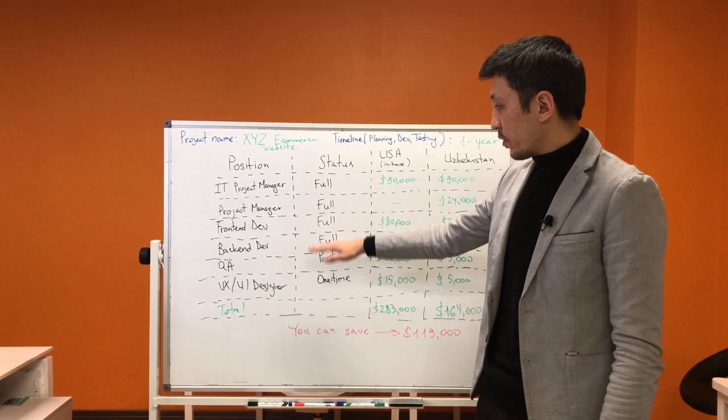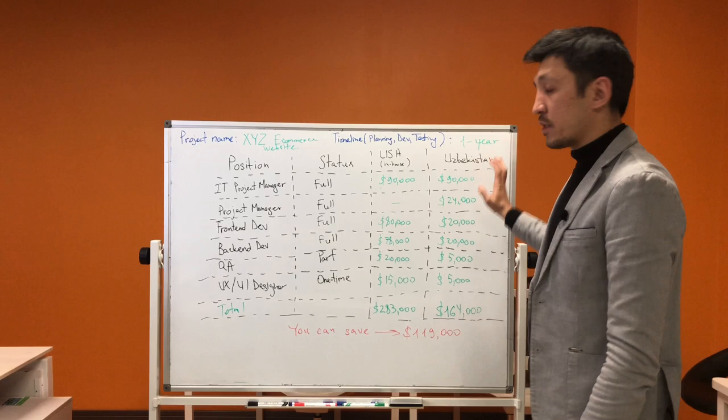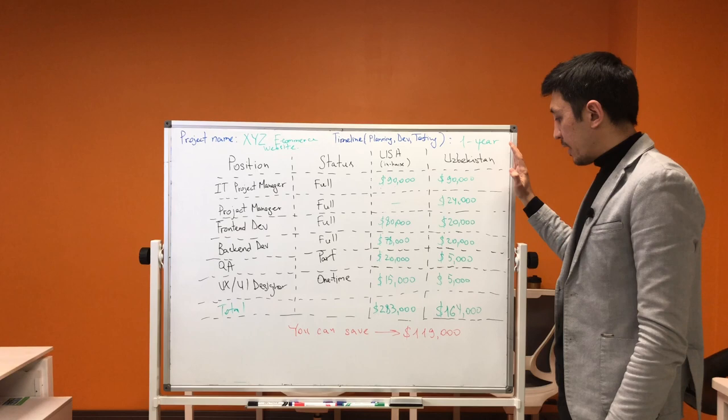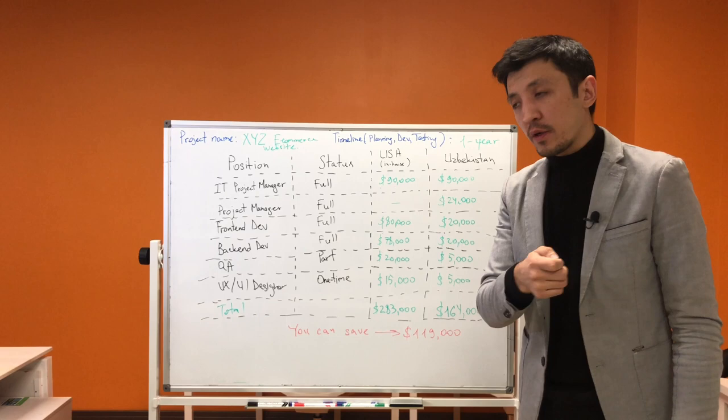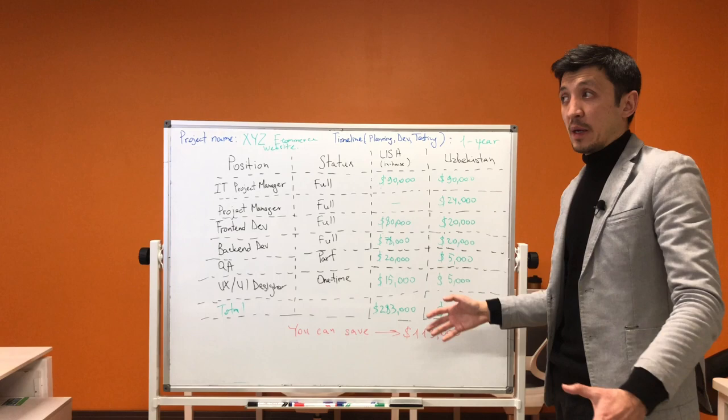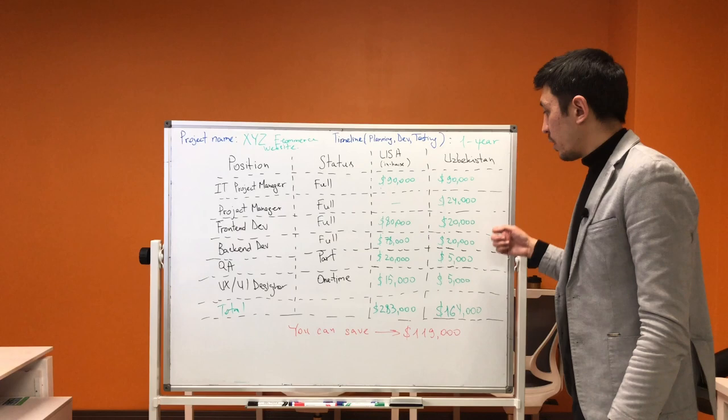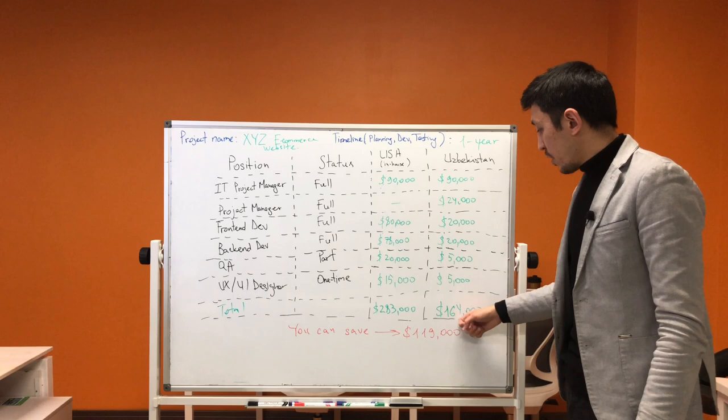These are example numbers which are up to date as of today, February 2023. You can hire people—these are yearly salaries, the yearly cost for each position. For one year, it will cost you $164,000 including your IT project manager.